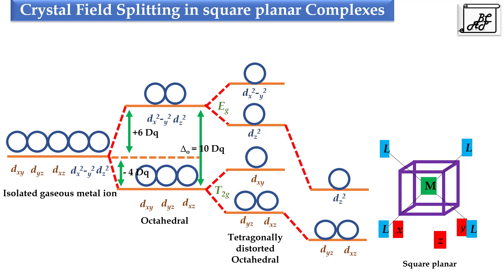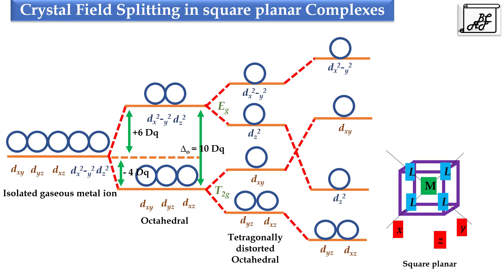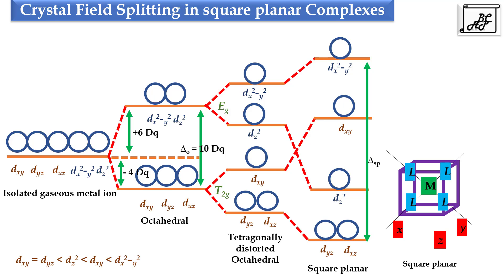Due to this, the ligands along the x and y-axis get more space and they move closer to the central metal atom and exert more repulsion. The energy of dxy and dx²-y² is increased. This is called crystal field splitting in square planar complexes. We can see that the energy levels are dyz and dxz (same energy), then dz², then dxy, and dx²-y² orbital. When we compare all the crystal field splittings, the tetrahedral ligand field has the least splitting whereas square planar complexes have the highest crystal field splitting.